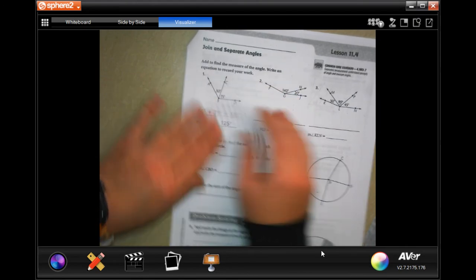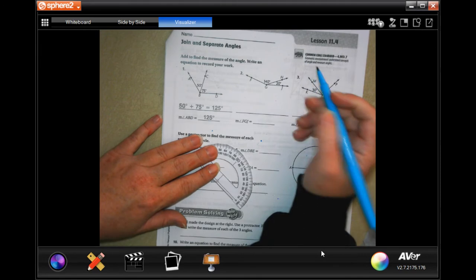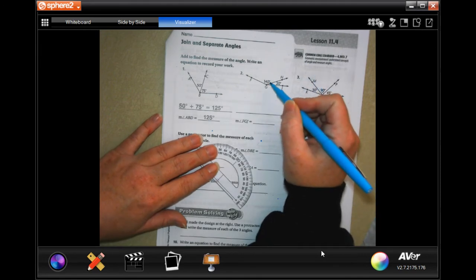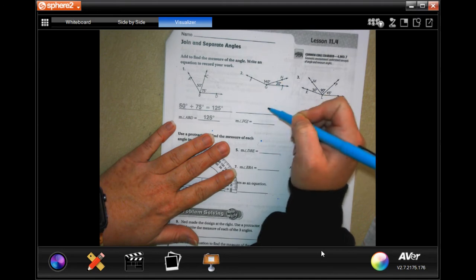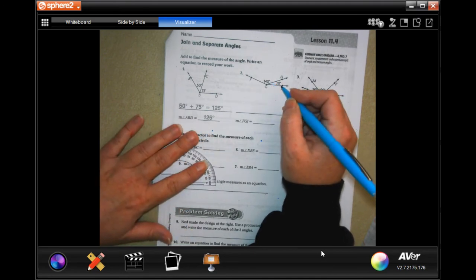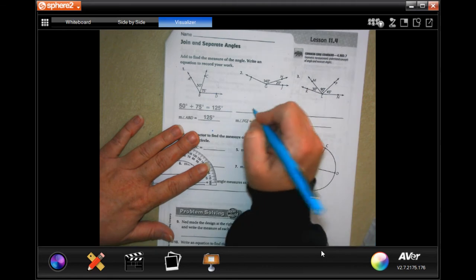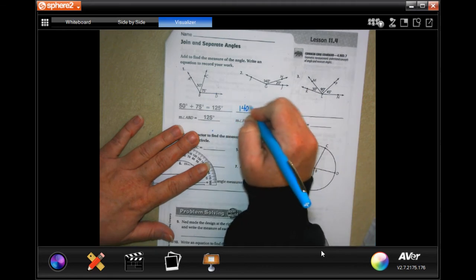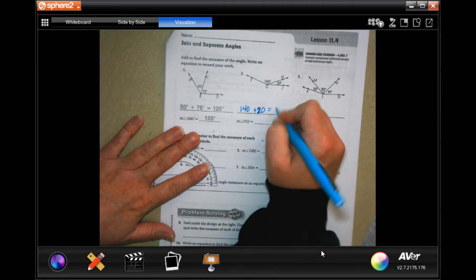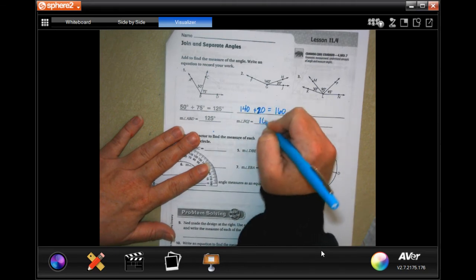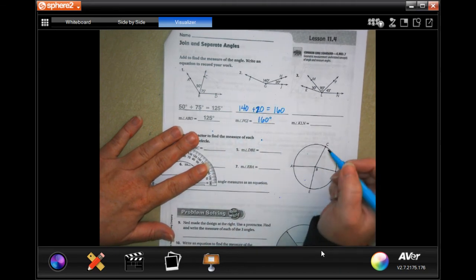So we're going to go ahead and we need to, for these ones, we actually don't have to measure. It already tells us what the measurements are. So we're just going to add them on. So 140 and 20 is just going to be 160. So 140 plus 20 is 160. So 160 degrees. It's that easy guys.